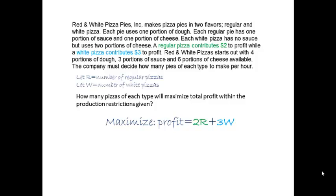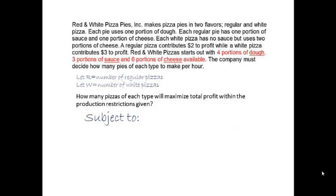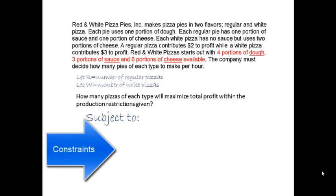The next part of linear programming formulation is to write mathematical expressions for the limited resources. They are called constraint equations because the resources are limited or constrained. Usually, as in this problem, there are several. The pizza problem has three limited resources — dough, sauce, and cheese — so there will be three constraint equations.